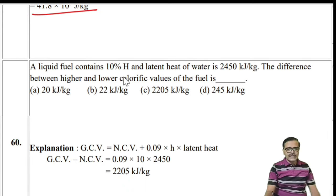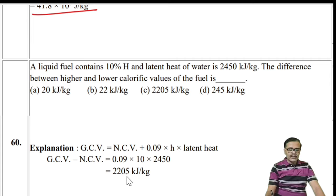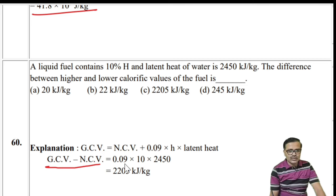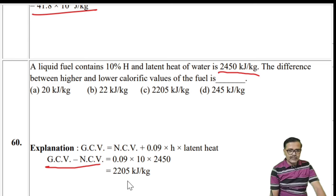Numerical: A liquid fuel contains 10% hydrogen. Find the difference between GCV and NCV (i.e., GCV − NCV = 0.09 × H × latent heat = 0.09 × 10 × 2450 = 2205 kJ/kg). The answer is option C: 2205.